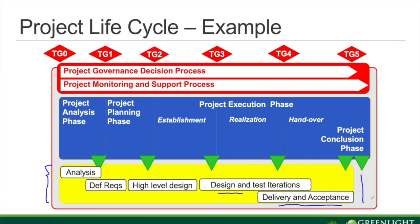This is a way to show it, but it could be something totally different — it could be building a house, and then we define the activities needed to build a house. The red part and the blue part are always the same — we always need to have good governance of what is going on, and we need to do all the project management activities, typically defined in the 11 knowledge areas that we see in the blue part.